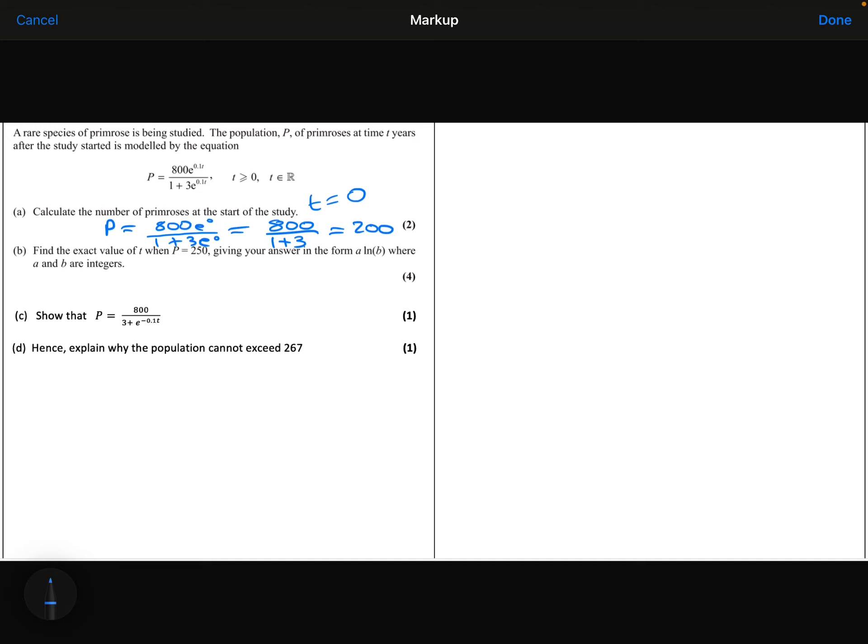Part B, find the exact value of t when P is 250, giving my answer in the form A ln B. So when was P 250? Let's put 250 into the model instead of P. And we're going to rearrange this equation and solve it to find out what t is.